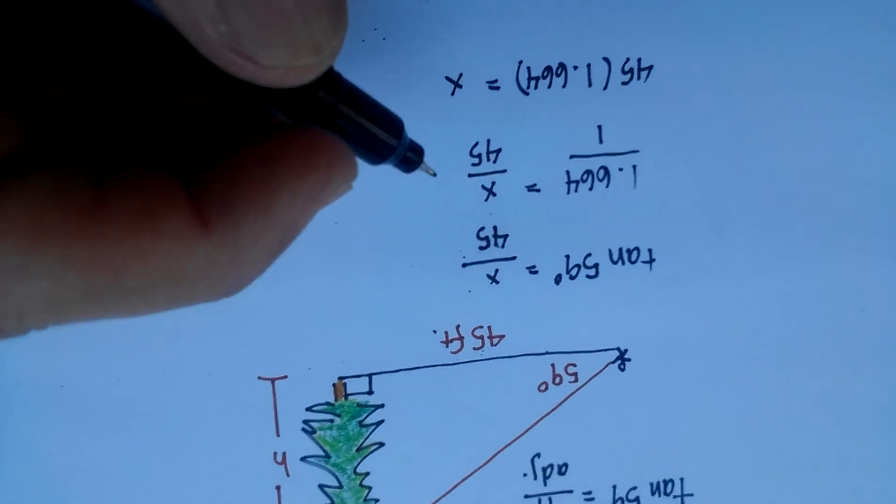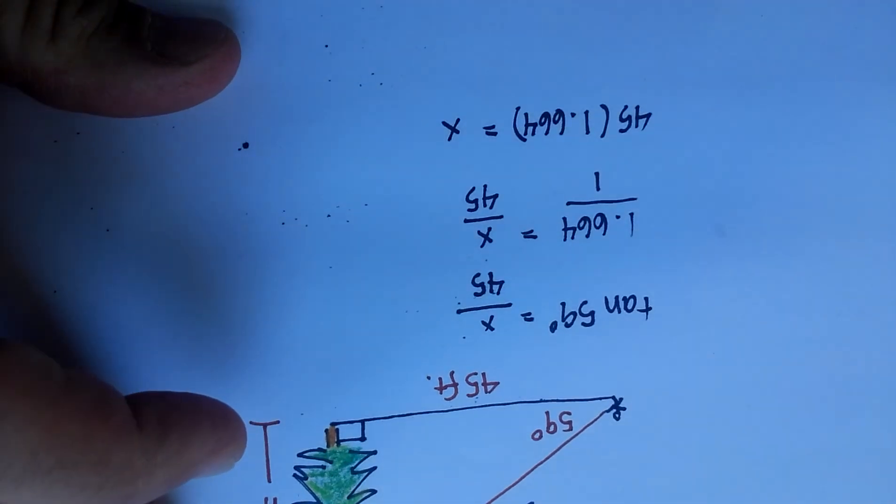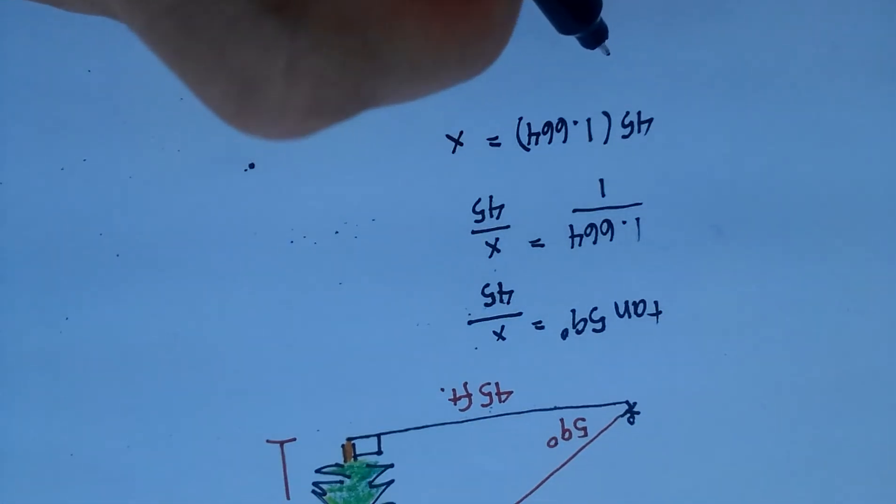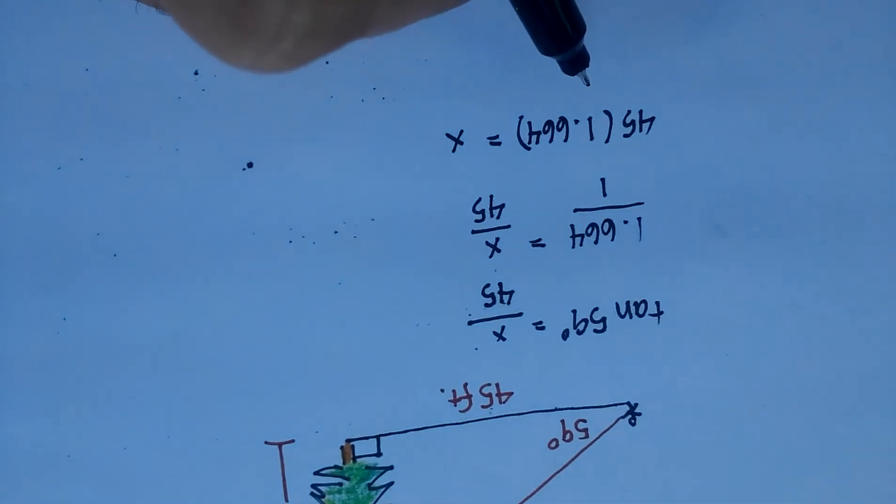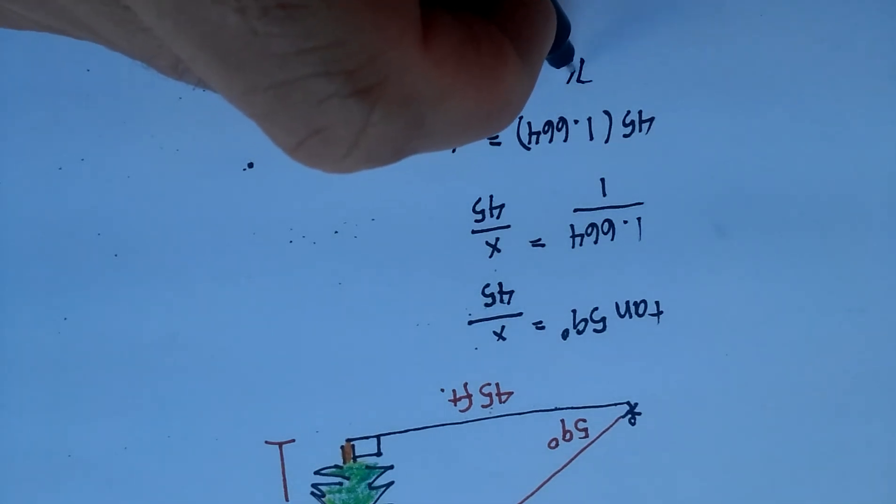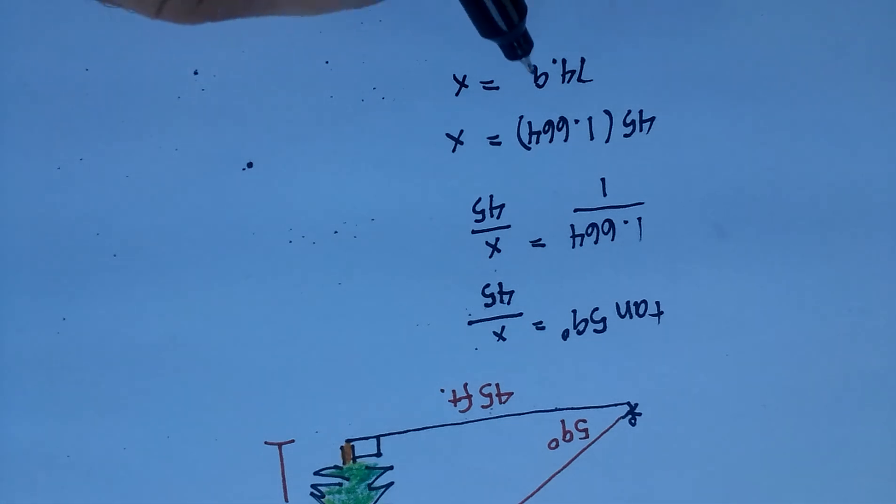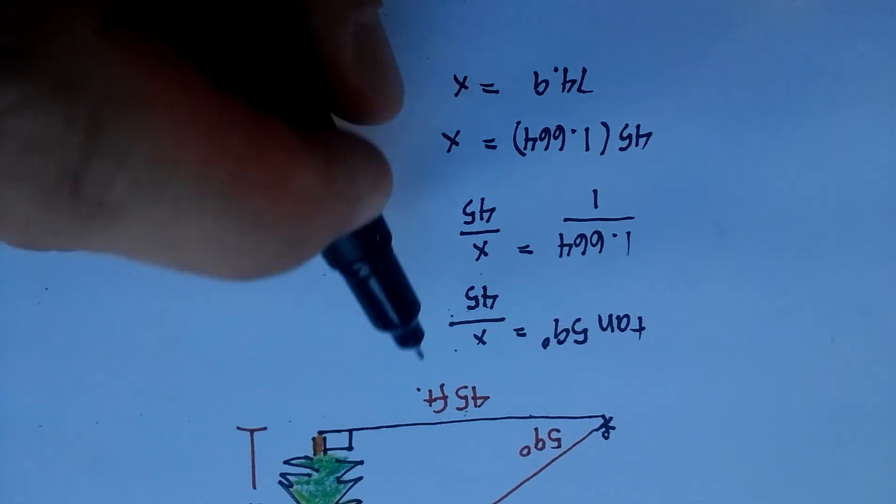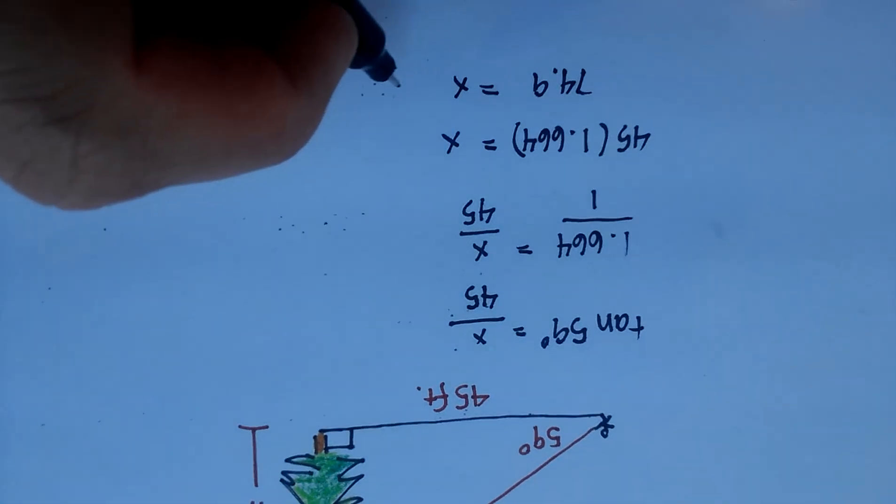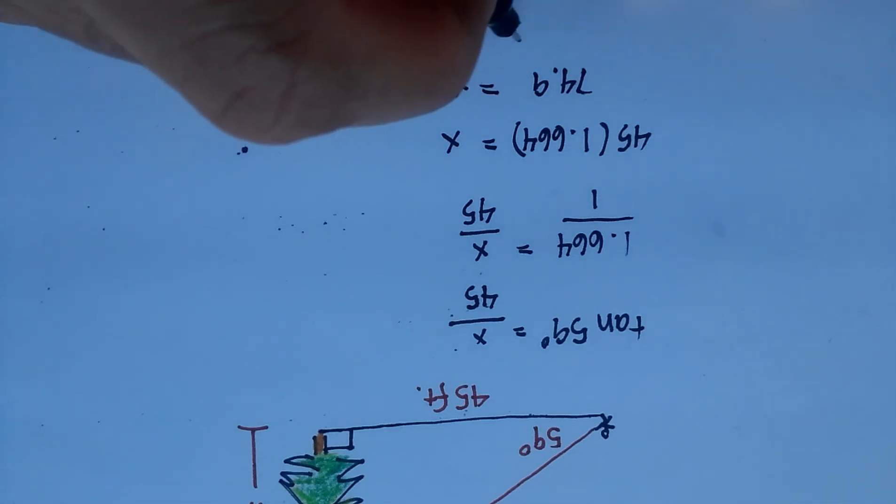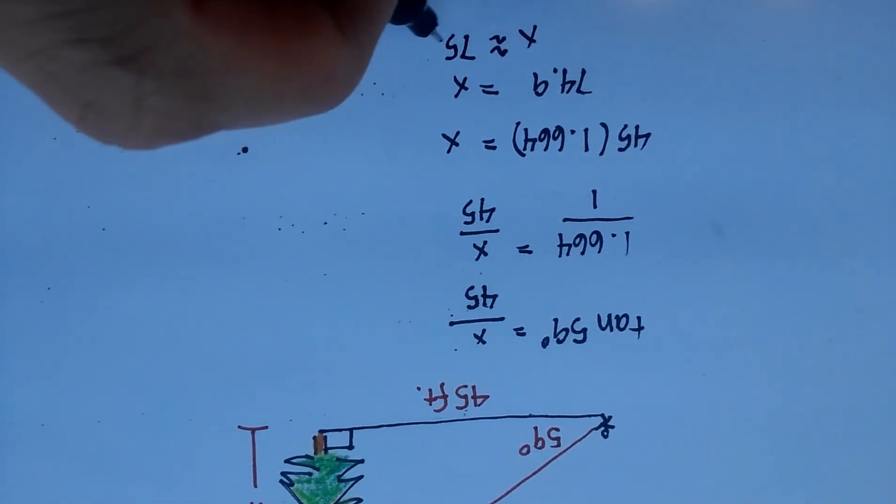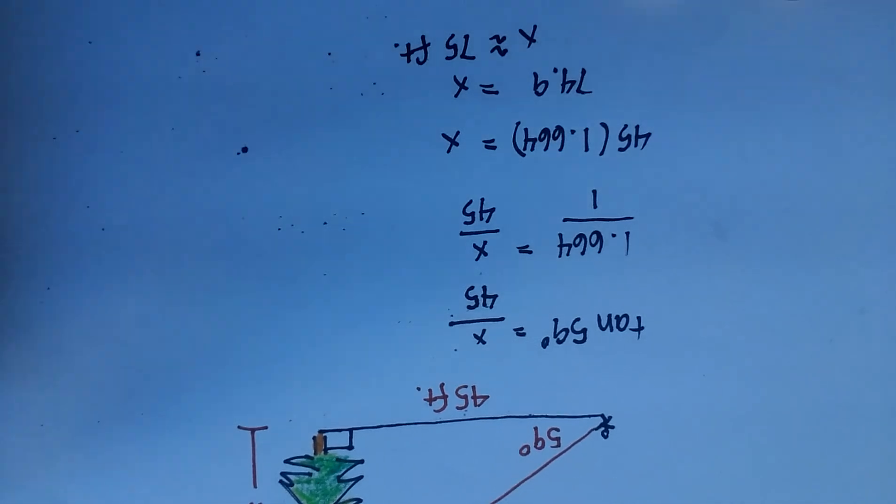And that's going to give you... 45 times 1.664 is 74.9 is equal to x. And that would basically be the height of the tree since you're in feet. So it's basically approximately... We'll say x is equal to approximately 75 feet. And that's one way of estimating the height of the tree.